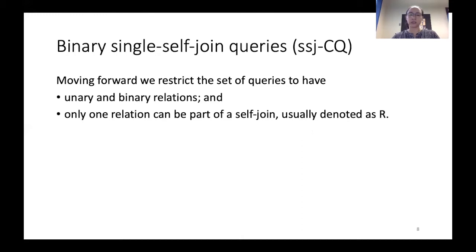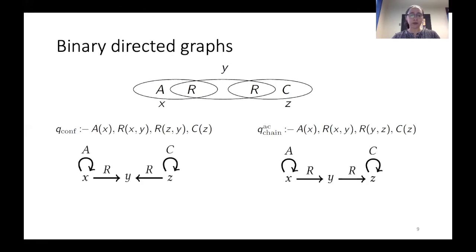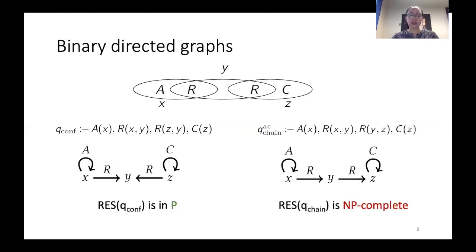In order to do that, we decided to restrict the scope of queries we are dealing with — what we call binary single self-join queries. The queries are binary because we only allow unary and binary relations, and we call them single self-join because only one relation is allowed to participate in a self-join, usually denoted by relation R. With unary and binary relations, we can represent the queries with directed graphs, where variables are nodes and atoms are represented by labeled directed edges. Even though two graphs can look similar, the one on the left has edge ZY while the one on the right has edge YZ — so they're not the same, and their resilience is also different. The resilience for Q_conf is in polynomial time while the resilience of the AC chain is NP-complete.